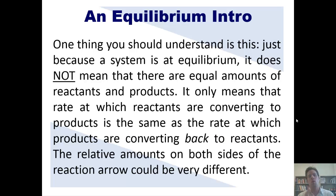Now I'm going to throw a wrench in the works. One thing you need to understand is this: just because a system is at equilibrium, that does not mean that there are the same amounts or equal amounts of reactants and products. It doesn't mean that. I could have tons more reactant than product or tons more product than reactant, or I might have about the same of both or somewhere in between. The only thing that it means is that when I'm at chemical equilibrium, the speed with which reactants convert to products is the same as the speed at which products convert backwards to reactants. That's what chemical equilibrium means. But the relative amounts of reactants to products on both sides of the arrow could be very different.